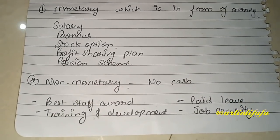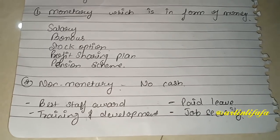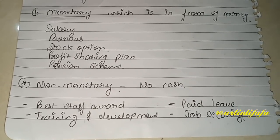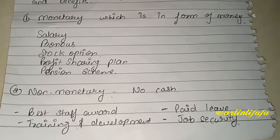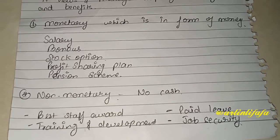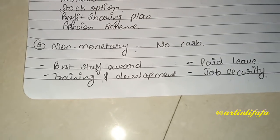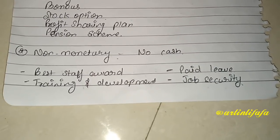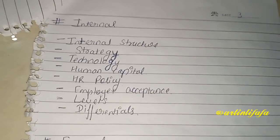Monetary compensations میں آتے ہیں: salary، bonus، stock option، profit sharing plan اور pension scheme۔ Stock option میں ہم organization کے کچھ particular stocks کسی particular employee کو money کے regard میں دے دیتے ہیں۔ Non-monetary strategy میں cash کی form نہیں ہوتی — جیسے best of award، paid leaves، job security، یا training and development کی facilities دے دیتے ہیں۔